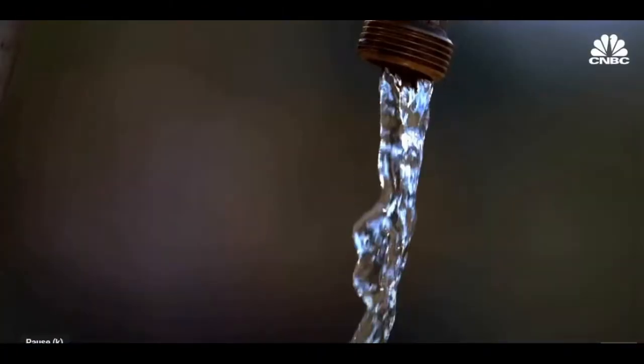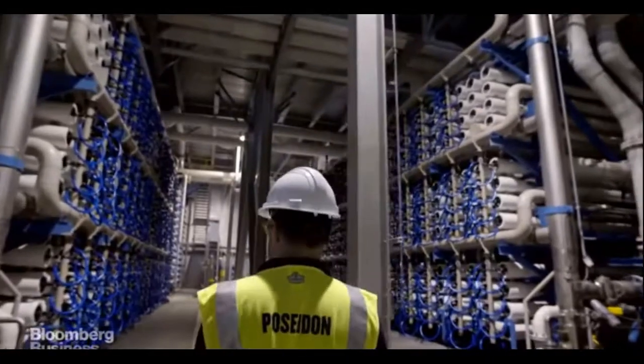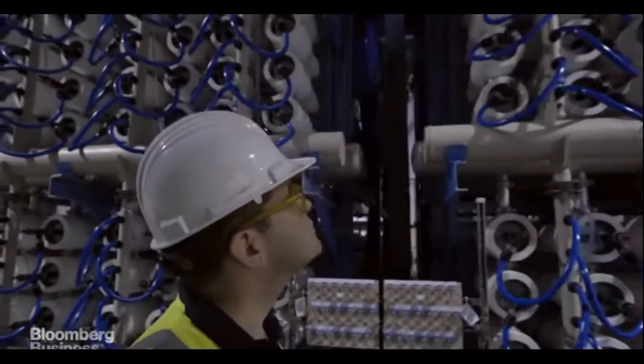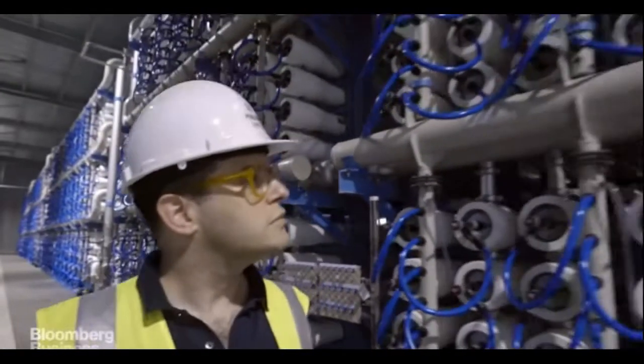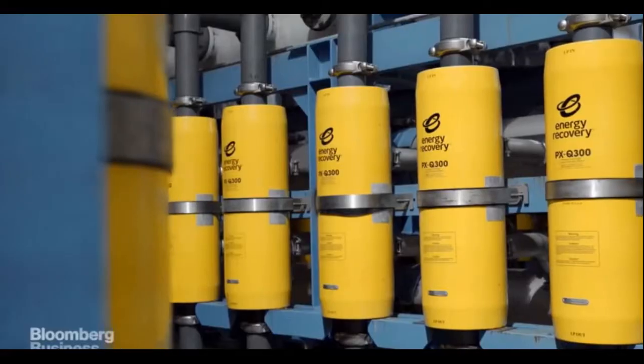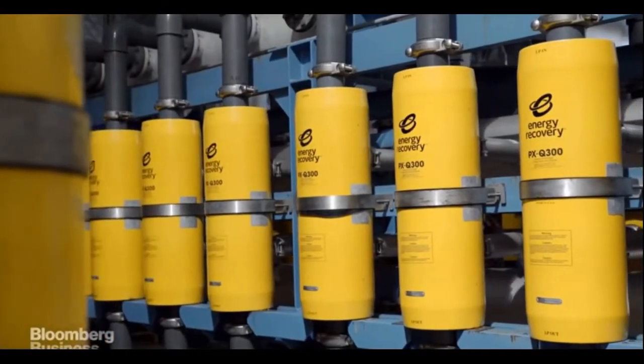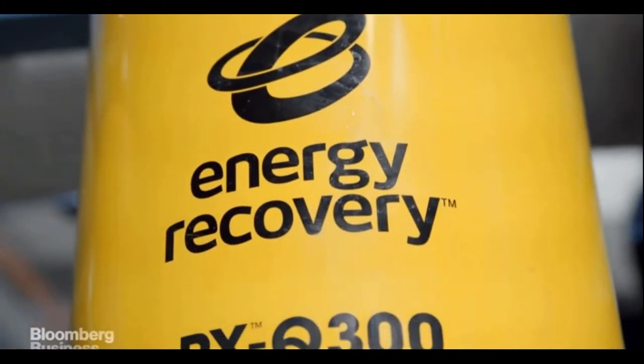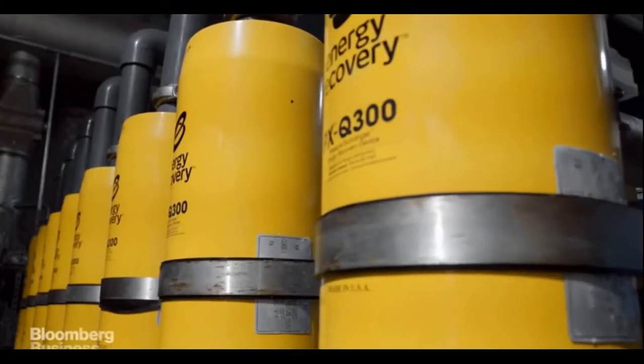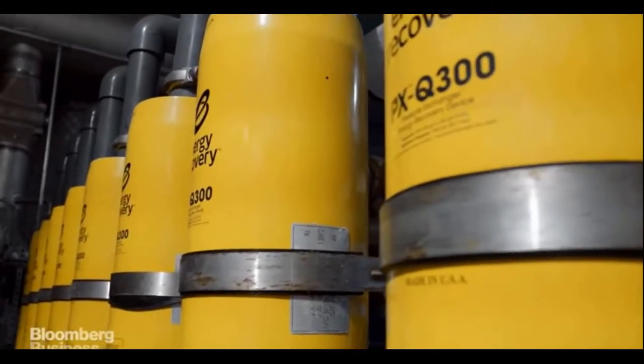To help reduce production costs, engineers have introduced energy recovery devices to capture and reuse energy expended at the end of the desalination process. Energy recovery devices used at the Carlsbad plant recover 46% of the total energy used for a savings of 146 million kilowatt hours per year. Also, advances in membrane technology are increasing the membrane's lifespan, reducing the need for replacement.